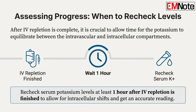So the infusion is done. How long do we need to wait before rechecking the potassium level? You must wait a minimum of one hour after the infusion is finished. Potassium has to be pumped from the blood into the cells — that process takes time. If you check too early, you get a falsely high number; the potassium is still just sitting in the bloodstream and hasn't distributed yet. That one-hour wait ensures the level is accurate.